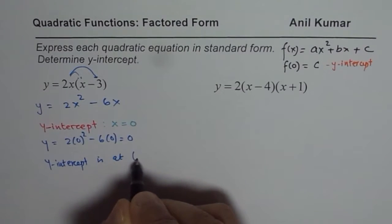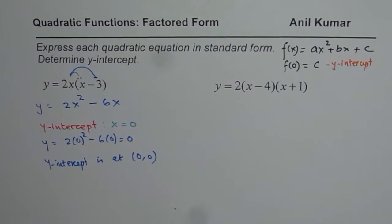Is at origin, at (0, 0). So that is what we get. So origin is our y-intercept.